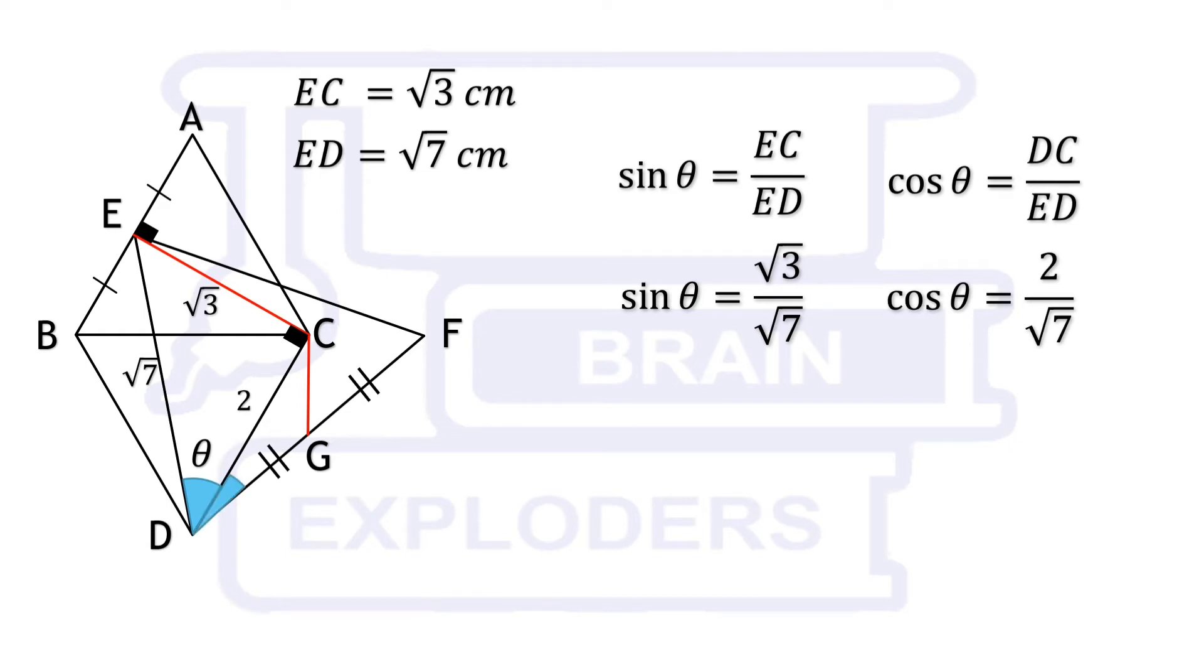DG is half of root 7 because length of DF is equal to length of ED and DG is half of DF.